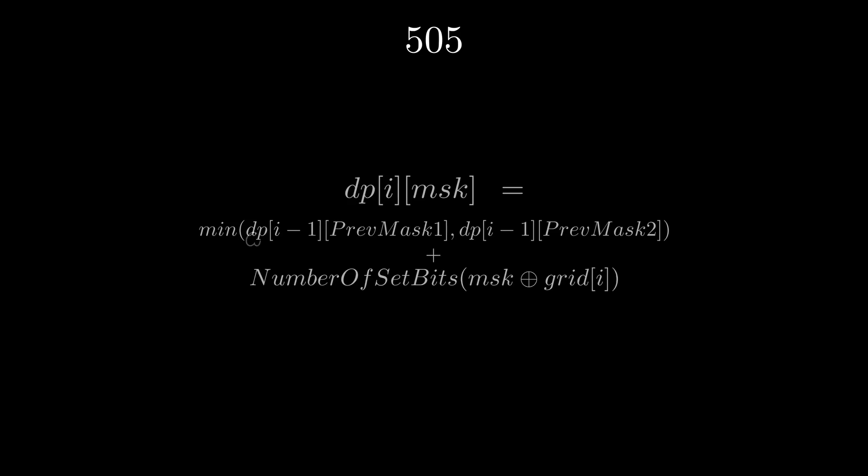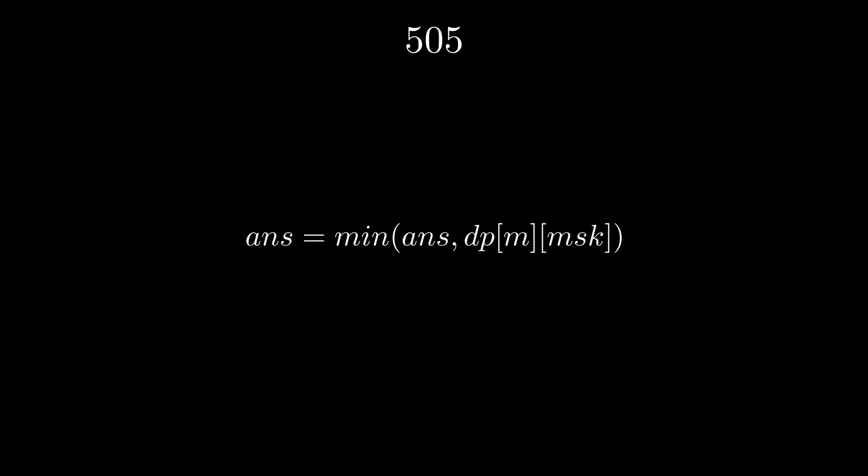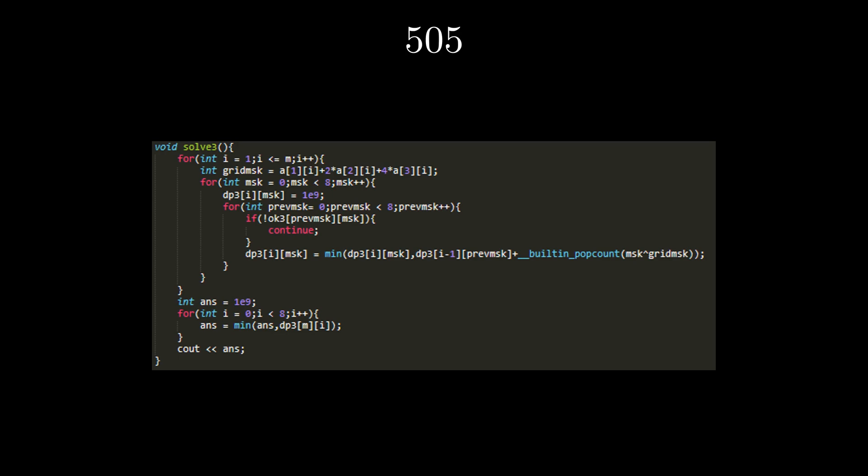The answer is then just the minimum of dp[m][mask], where mask represents all possible masks. Let's look at the code now for n equals 3. Grid mask denotes the bit mask value of the ith column. Mask denotes the value that we want the ith column to be. So, we initially set dp3[i][mask] to a value larger than the largest possible answer.